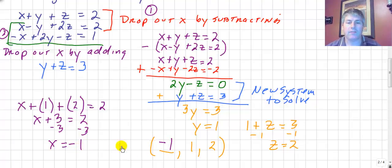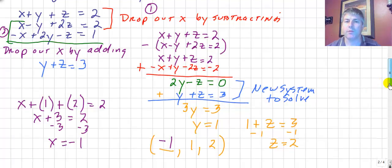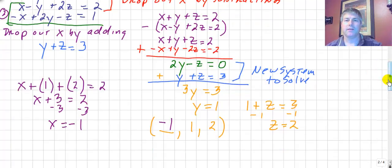We have our x, negative one. Our y is one, and our z is two. We have solved our system of three equations for all three variables. We will see you in class.